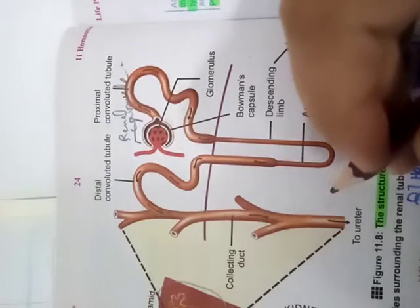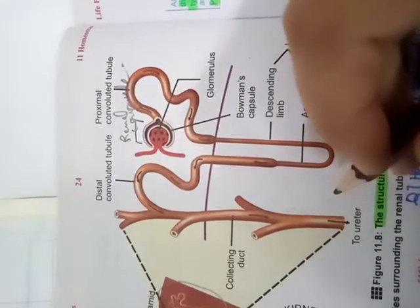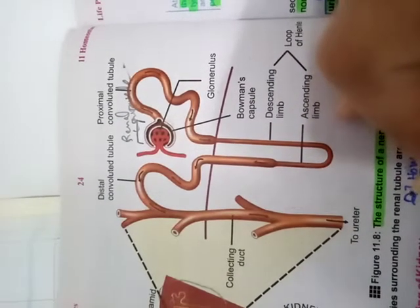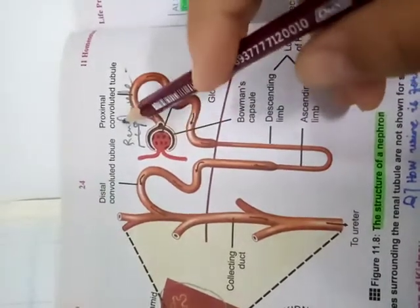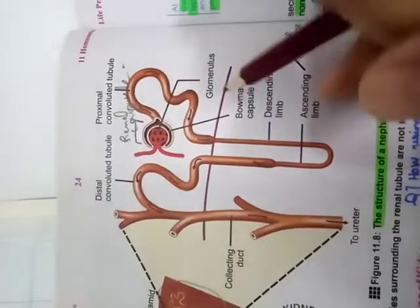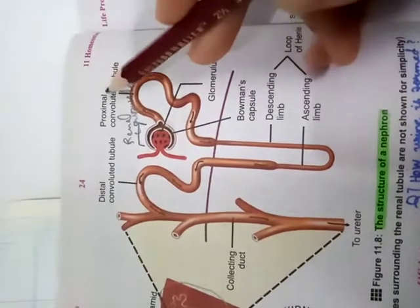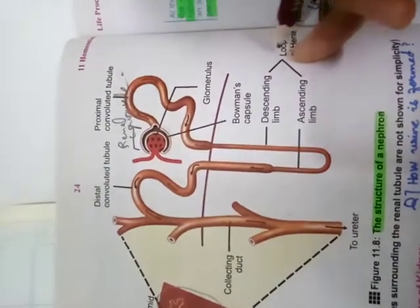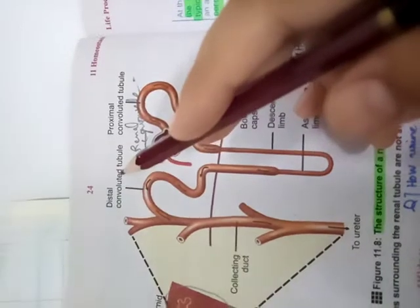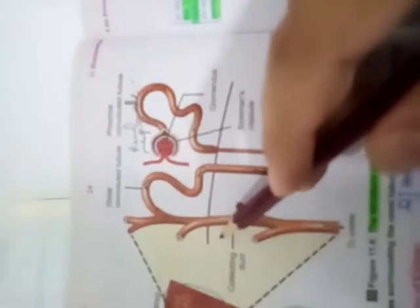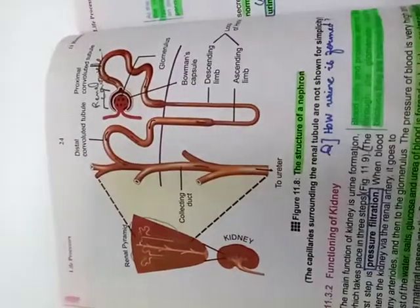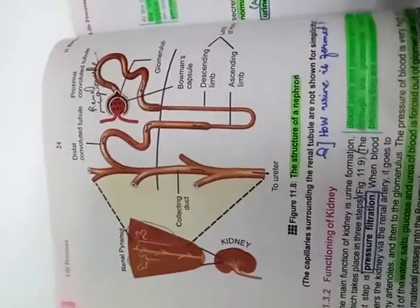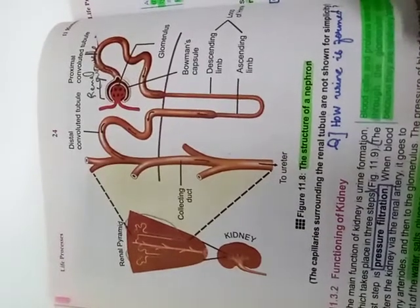After the urine is formed, the blood proceeds back to the body. The other parts are the renal tubules: the proximal convoluted tubule, the loop of Henle, the distal convoluted tubule, the collecting ducts, and the papillary ducts. We have now seen the kidney structure — both the overall kidney structure and the internal structure of the kidney.